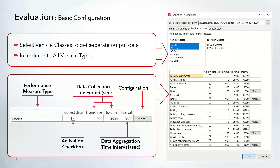Moving on to the second tab, called Result Attributes — this is where all the main data configuration is set up for any results collected and reported within Vissim. By default, Vissim collects and aggregates data for all vehicles. However, at the top you can select additional vehicle classes if you want to collect separate data as well. This allows you to collect data for all vehicles, and then separately for selected classes like cars and heavy vehicles, which will show up as separate outputs.